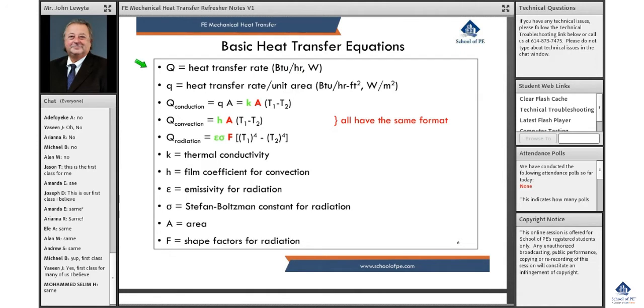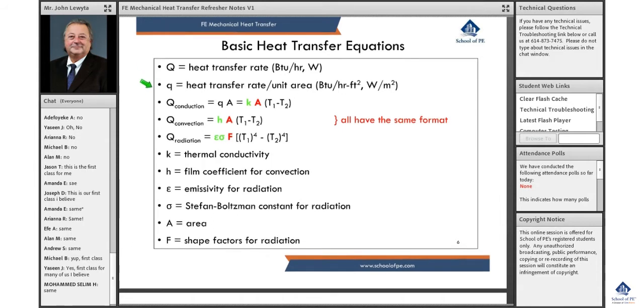Typically, it'll say to get the answer in heat transfer rate, BTUs per hour or something like that. They don't include the units in each of the four answer choices, so be careful—that could be a hangup. Make sure you understand heat transfer rate versus heat transfer rate per unit area.